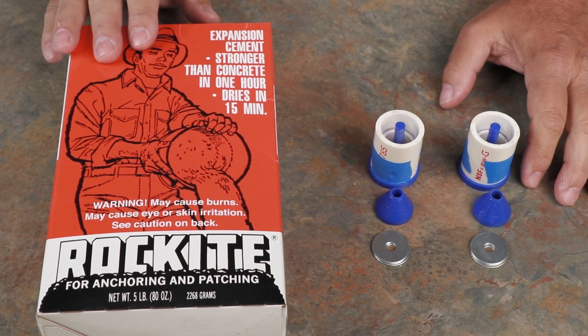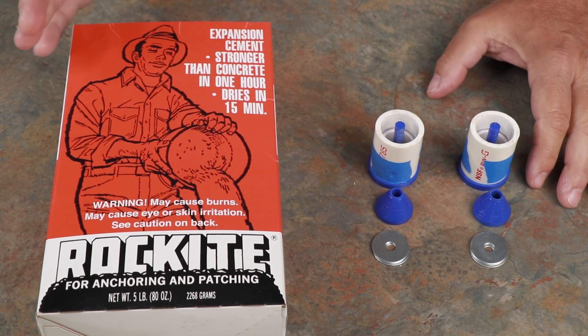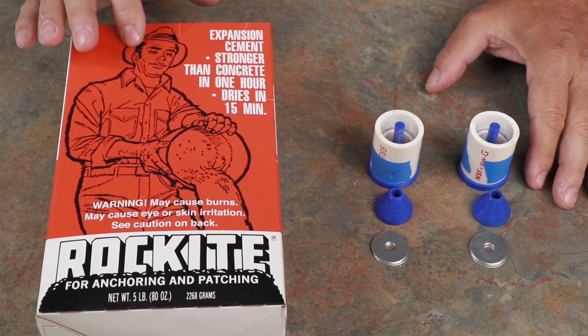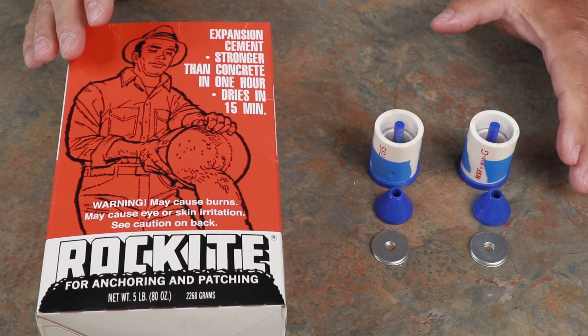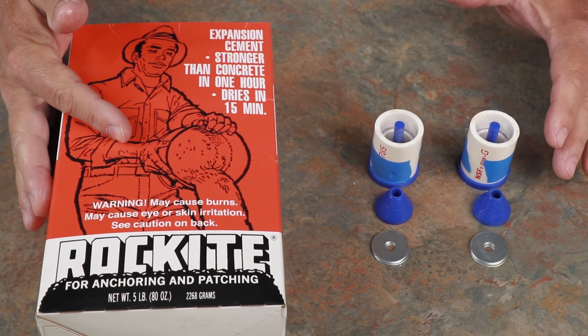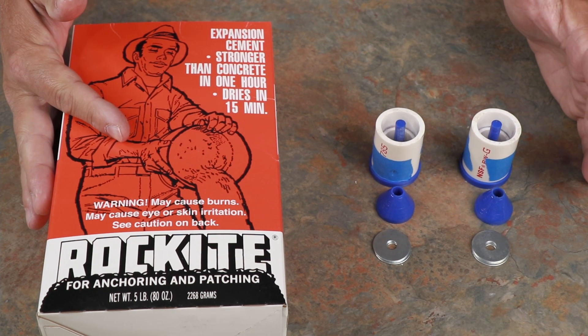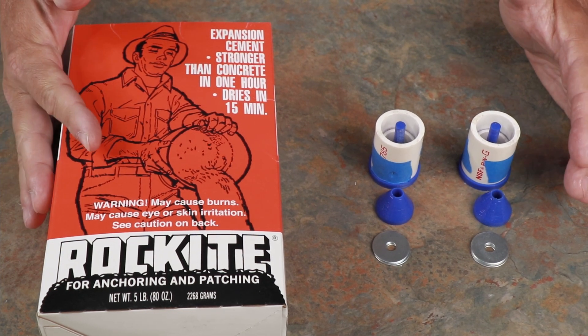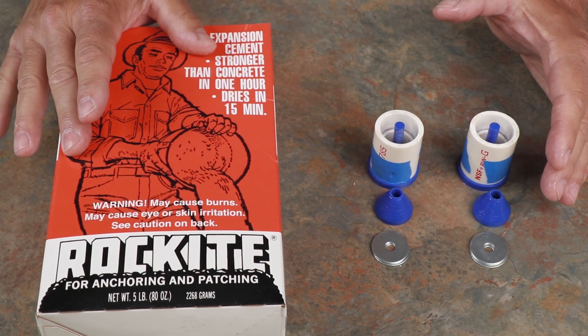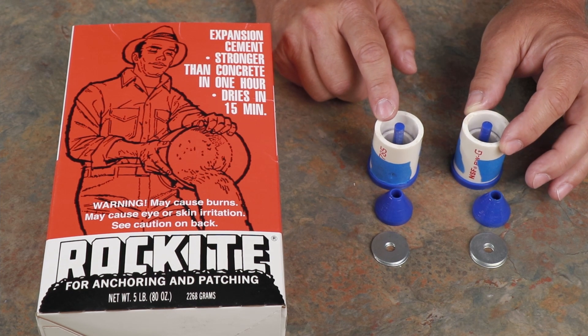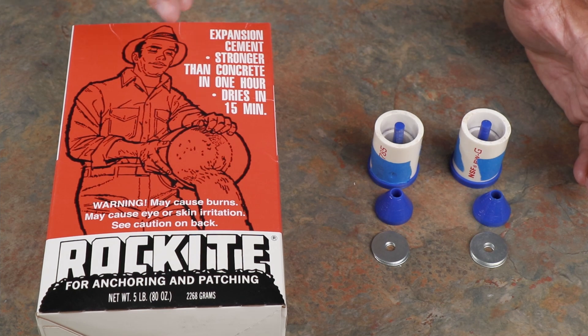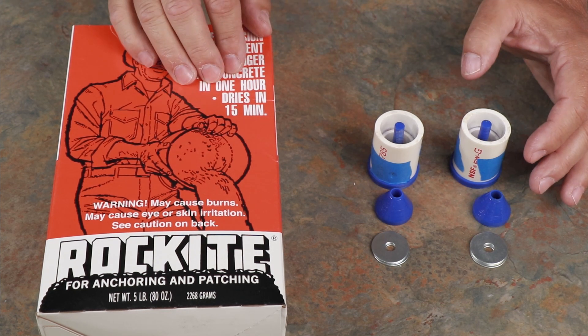This is what the Rockite expansion cement looks like. It's the same as hydraulic cement. It expands slightly as it cures and I prefer this brand because some of the others I have tried are very coarse and so this particular brand will give me a nice smooth nozzle. It's easy to work with, sets up fast, it's fine like flour and it just really works well for me. I'm going to mix up the Rockite to the consistency of pancake batter and start pouring it into our molds.